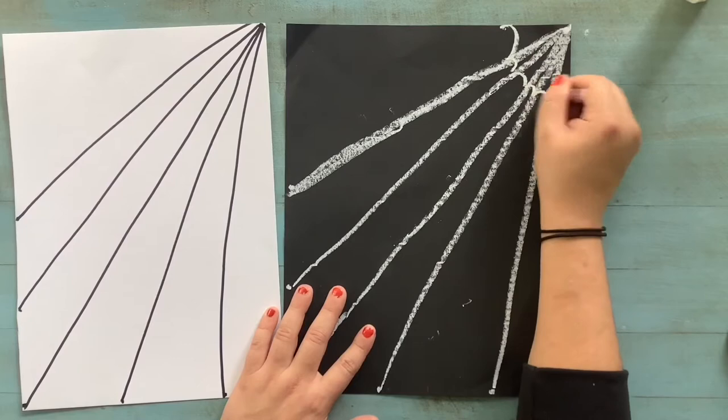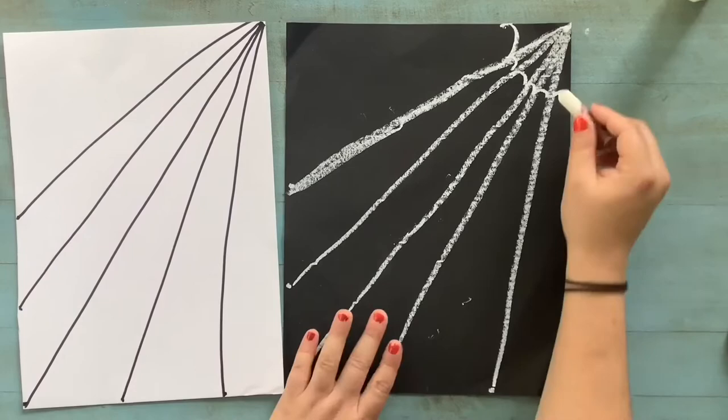Every space in between will have a bumpy line. This way is a little bit trickier, but it will look like a more realistic web.